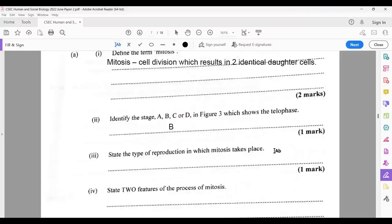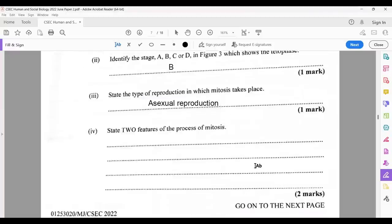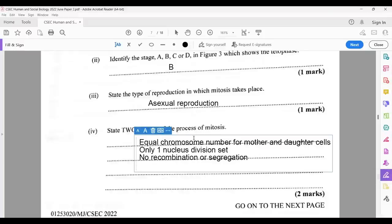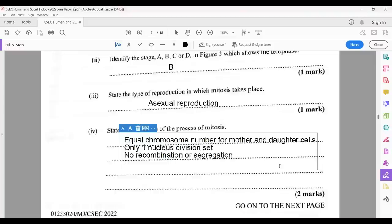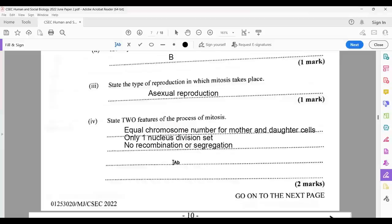State what type of reproduction takes place in mitosis. Asexual reproduction. That's one mark. That's a giveaway mark. State two features of the process of mitosis. For two marks, quite a bit of features that you could choose from. Equal number of chromosomes for the mother and daughter cell. It's one nuclear division. No recombination or segregation of chromosomes. So you could choose from. There are others if we go into details about the mitosis. But these are the ones that we chose from. And they only asked for two.